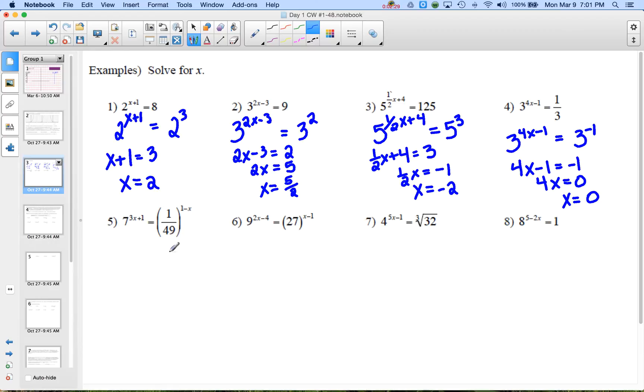Next problem, you need to find a common base, it's going to be 7, so we get 7 to the 3x plus 1. Now on this side I'm going to think of this as 7 to the negative 2 power to the 1 minus x. So the next thing I have to do is a power to a power, so you do have to remember the exponent rules. Power to a power you multiply the exponent, so we get 7 to the 3x plus 1 equals 7 to the negative 2 plus 2x, when you distribute that negative 2. So I end up with 3x plus 1 equals negative 2 plus 2x, so I'm going to subtract 2x from both sides, so I get x on the left, and I'm going to subtract 1, so I get x equals negative 3.